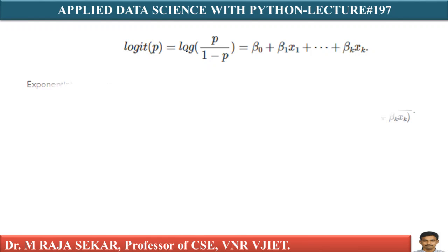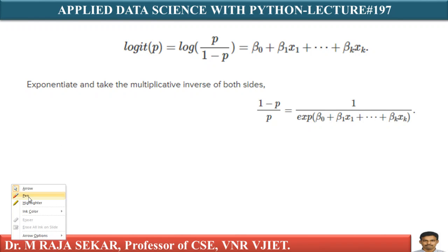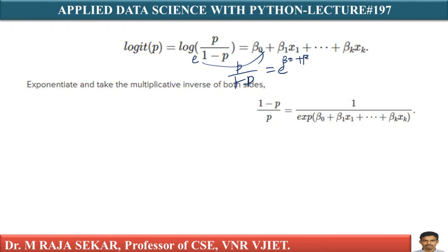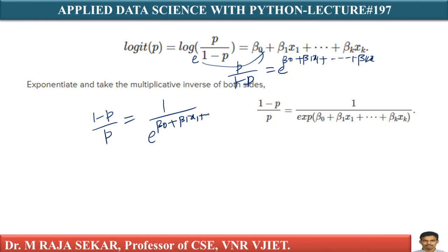This can be rewritten. Taking the exponent of both sides, P by 1 minus P equals e to the power of beta 0 plus beta 1 X1 plus so on beta k Xk. Then taking the multiplicative inverse on both sides, 1 minus P by P equals 1 divided by e to the power of that expression.